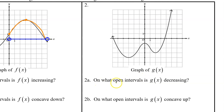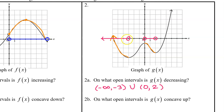2a. On what open intervals is g of x decreasing? So where is g of x falling from left to right? We can see that g of x is falling from here to here, then rising, then falling again. Be aware that we have an arrow on the left, so this interval will include a negative infinity. Recording input values only, g of x is decreasing from negative infinity to negative three, union zero to two.